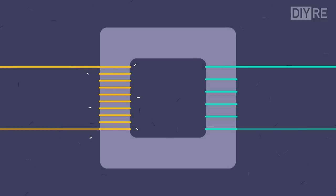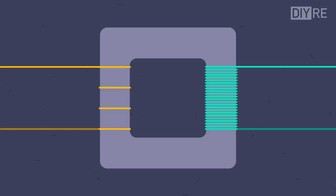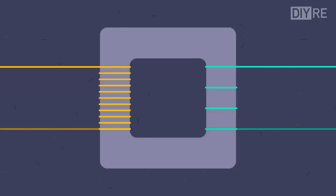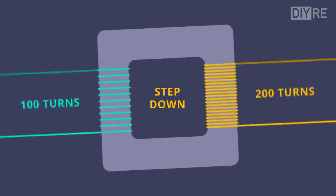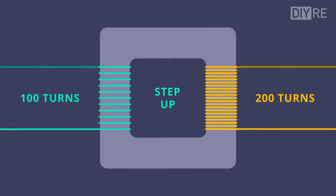By changing the number of turns in each coil, we can directly change how much signal is transferred between them. For example, if the primary coil has 200 turns, and the secondary has 100 turns, we call this a turns ratio of 2 to 1, only half the signal will be transferred. This is called a step-down transformer. However, we could turn that same transformer around and use it as a step-up transformer to double the signal.